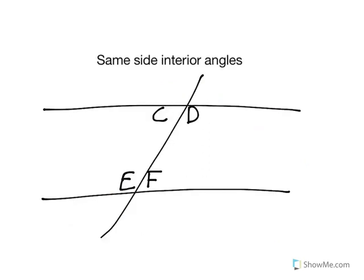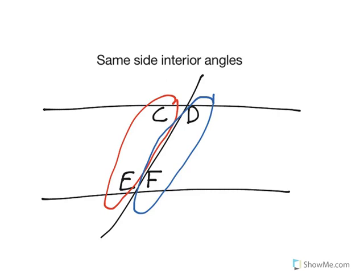C and E, and D and F, are same side interior angles. These angles are supplementary, which means they add up to 180 degrees.